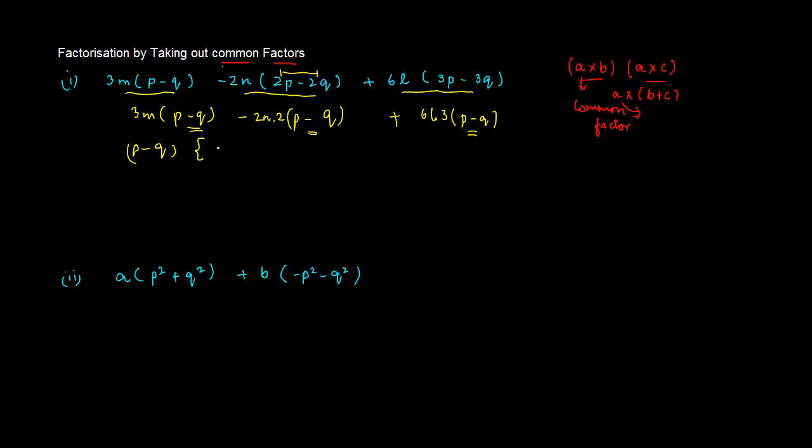Here, if you divide this by P minus Q, you will get 3M minus. In this case, P minus Q goes out, what is left? 2 into 2, 4 into N, 4N plus. Here, what is left? 6L into 3, 18L, right?